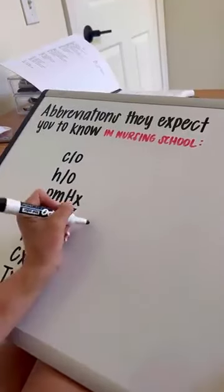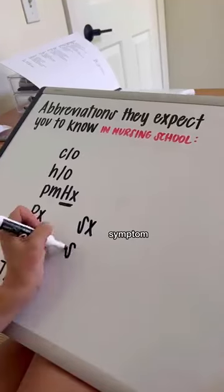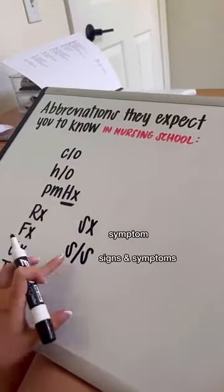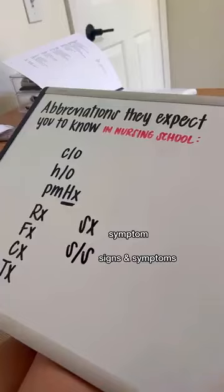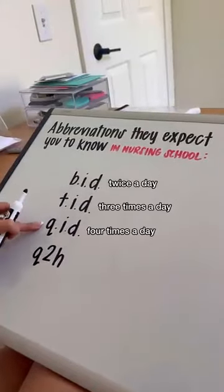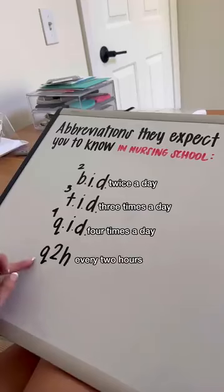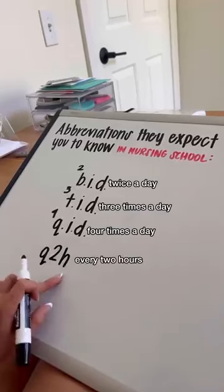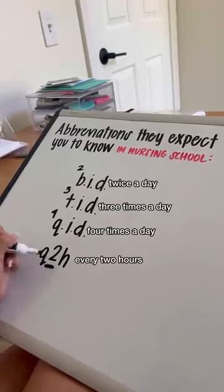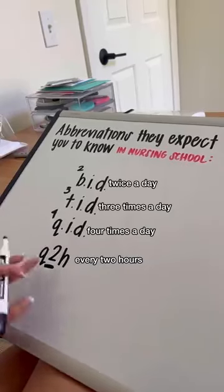How could I forget? SX is symptom. If you see S slash S, that's signs and symptoms. Twice a day, three times a day, four times a day. Q means every — so every two hours. This could interchange and have any number there, so Q three hours, Q four hours.